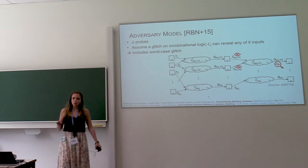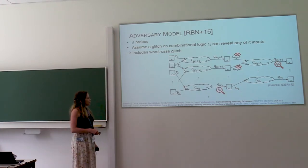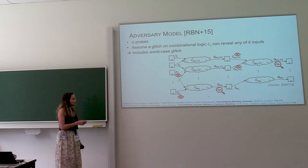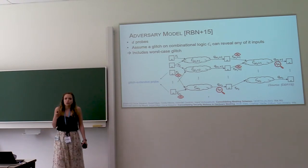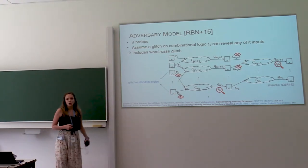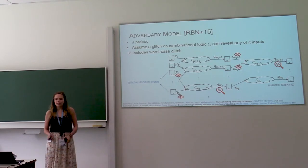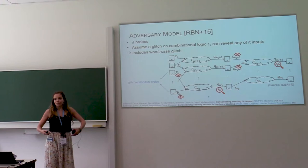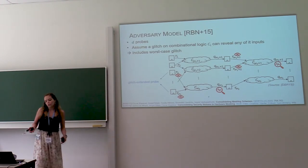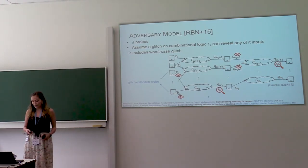Then to account for glitches, we are going to assume that he can see also these wires. And suppose that he can put a second probe on the system. Then if he probes this wire, then he can see also these wires. We call this a glitch extended probe. And so by assuming that the adversary has access to this information, we include the worst possible glitch that could happen in this combinational logic in the model.